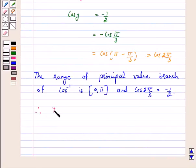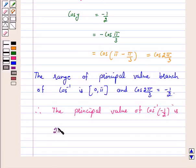the principal value of cos inverse minus 1 by 2 is 2 pi by 3. And this is the answer for the above question.